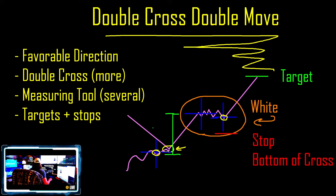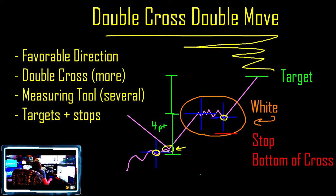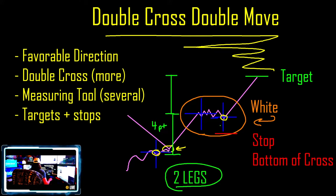I'm going to measure the distance from here to here — let's say that this is four points. You need to make sure that we are measuring the distance from here to here and that we want that same movement from here to there. This is the double cross double move measurement — it can be from a pivot, from another cross, or from a multi-cross to multi-cross. The main idea is that we are looking for the leg on the left — two legs, equal distance.